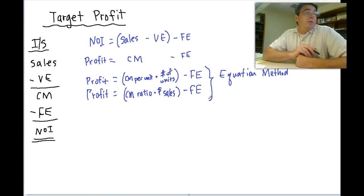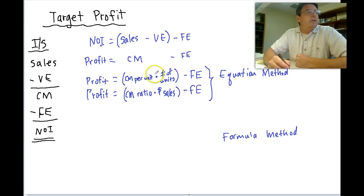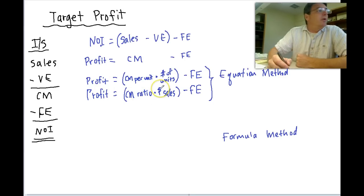You notice in the book we also have a formula method. That's basically just a variation of the equation. Instead of solving for target profit or having target profit on one side of the equals, we're going to focus on these two numbers. Numbers of units and dollars of sales.